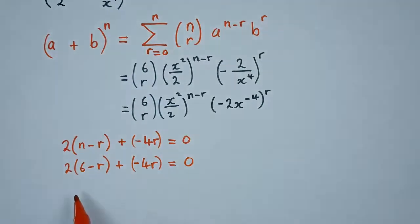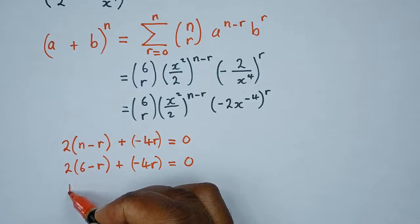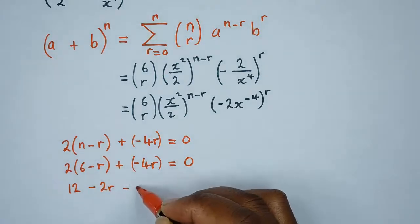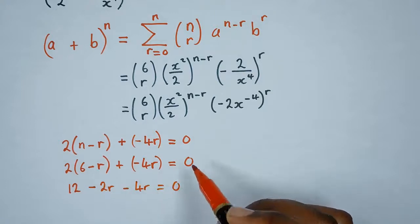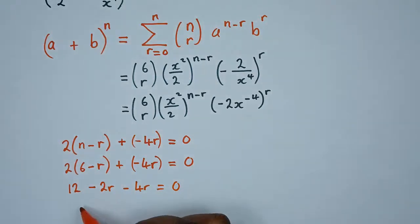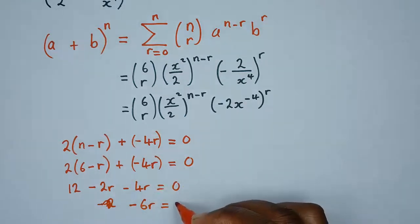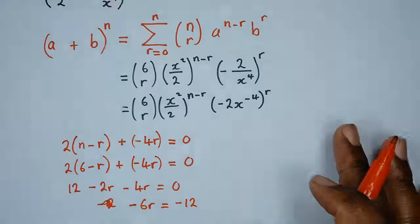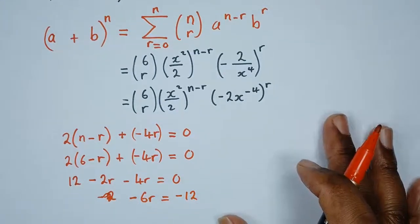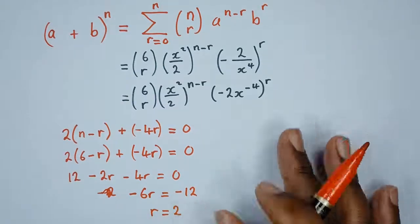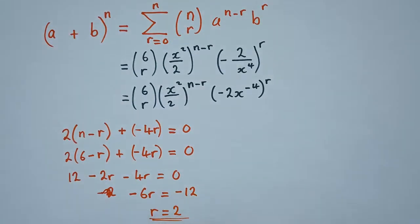Expanding, this gives us 12 minus 2r minus 4r equals zero, so negative 6r equals negative 12. Therefore the value of r is 2. We've found the value of r — that's the key step.